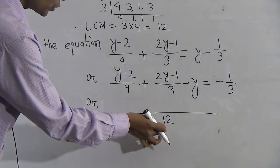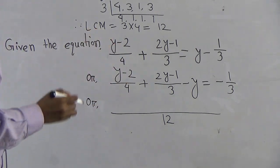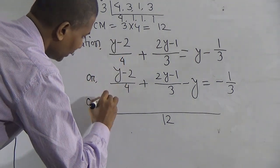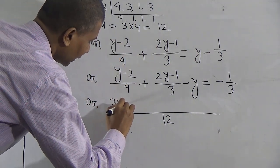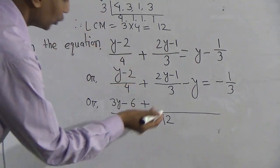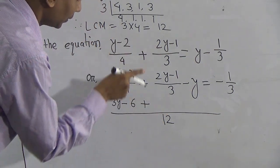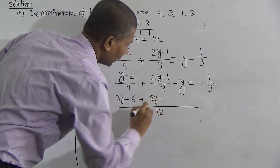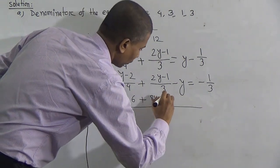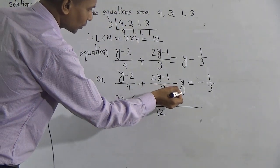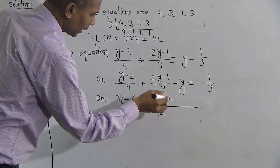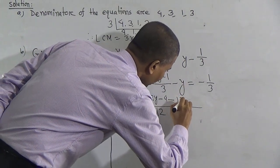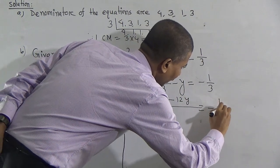Now, this LCM is 12. Divide 12 by 4, you get 3. Multiply 3 with y minus 2, giving 3y minus 6. Then divide 12 by 3, you get 4. Multiply 4 with 2y minus 1, giving 8y minus 4. There is also a denominator of 1: divide 12 by 1, you get 12. Multiply 12 with y, giving 12y. So the right-hand side becomes minus 1 by 3.